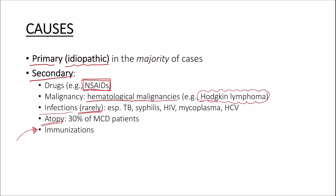For example, a patient who regularly uses non-steroidal anti-inflammatory drugs and presents with edema — you have to keep in mind minimal change disease. Another scenario is a patient with nephrotic syndrome plus cervical lymphadenopathy with or without weight loss, fever, and night sweats, which are called the B symptoms. In this case you have to think of Hodgkin's lymphoma.